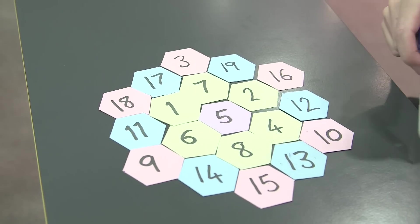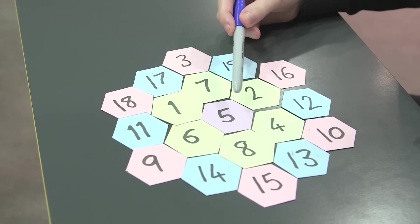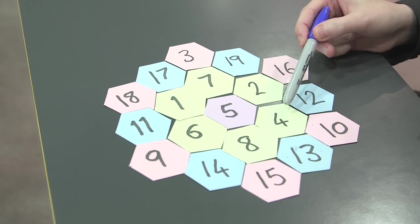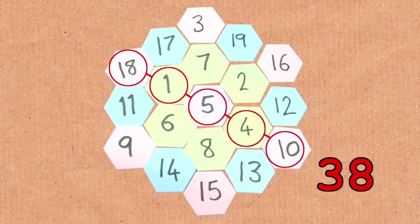Or if I do a big one here, it's got 5 right down the middle. 18 plus 1 is 19, plus 5 is 24, plus 4 is 28, plus 10. So it's called a magic hexagon. Every row adds up to 38.